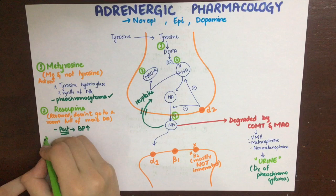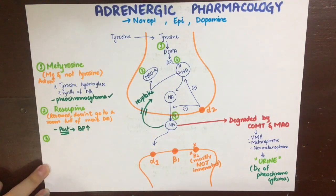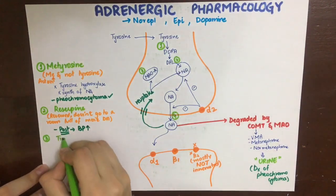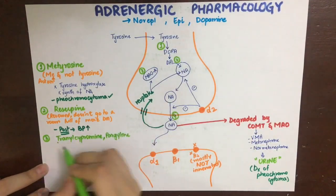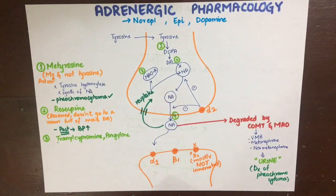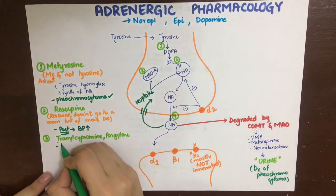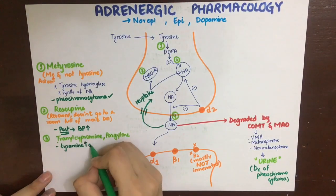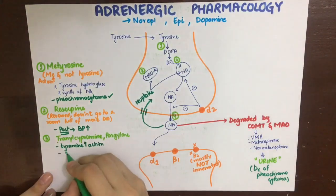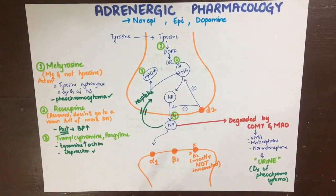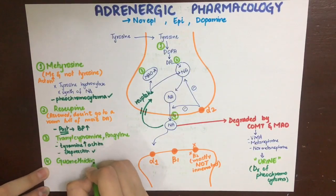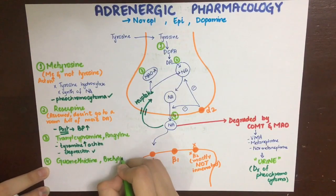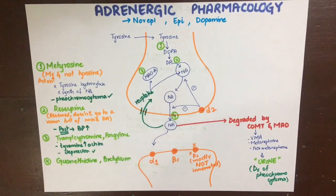The drugs acting at site number three are tranylcypromine and pargyline. Both act by inhibiting the MAO enzyme, thereby inhibiting the degradation of norepinephrine. They potentiate tyramine action and can be used in depression because they increase monoamines — particularly norepinephrine — within the central nervous system.